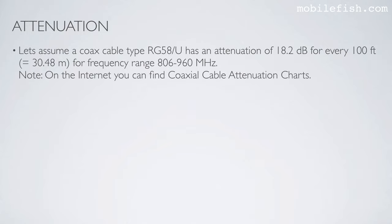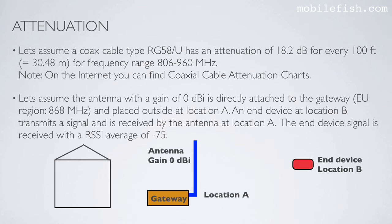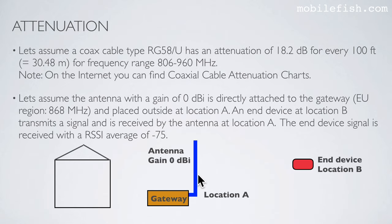On the internet you can find coaxial cable attenuation charts. Let's assume an antenna with a gain of 0 dBi is directly attached to the gateway. This gateway operates in Europe and is placed outside at location A. An end device at location B transmits a signal and is received by the antenna at location A. The end device signal is received with an RSSI average of minus 75.